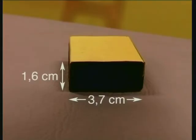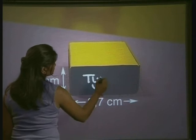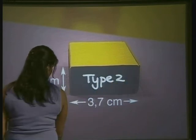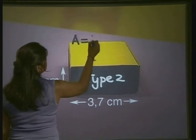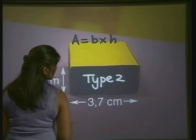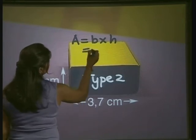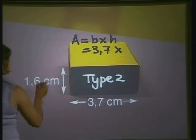Now we work out the surface area of the side face rectangle. We'll call this rectangle Type 2. We know that the area of a rectangle is area equals base multiplied by height. Now the base in this case is 3.7 multiplied by the height which is still 1.6.